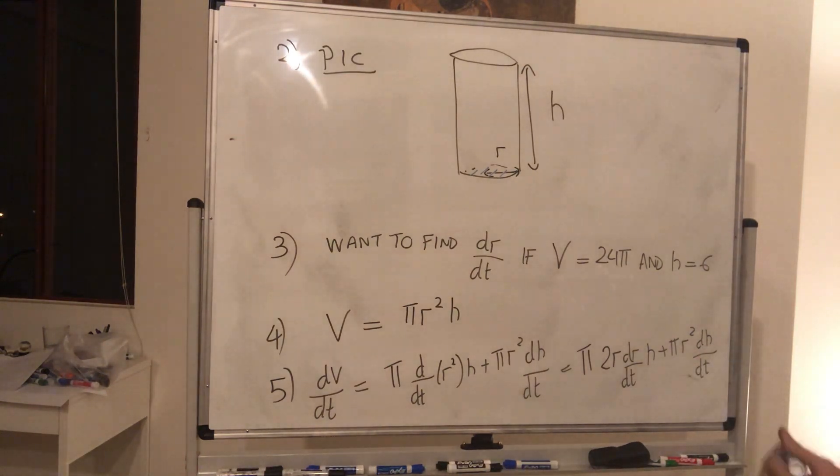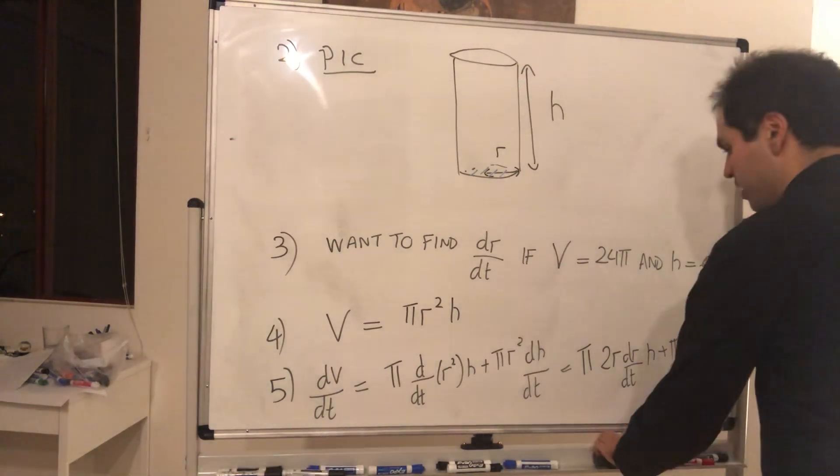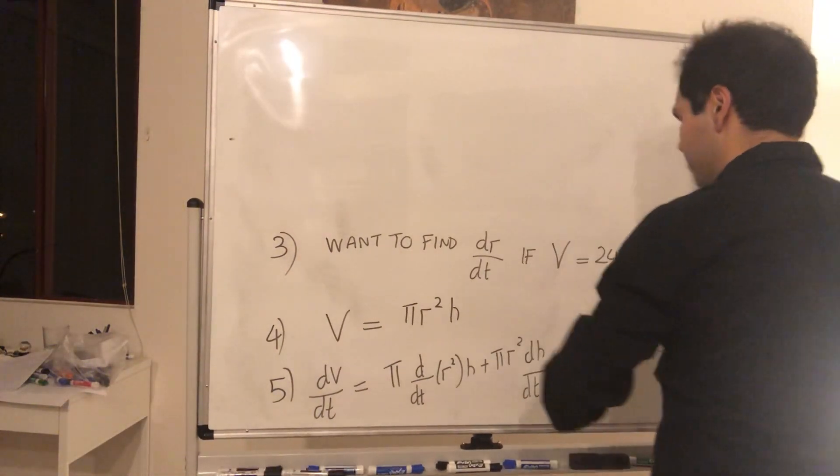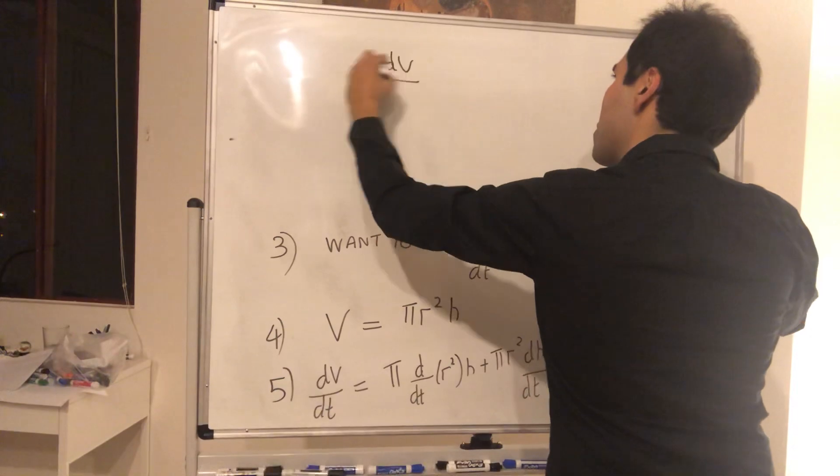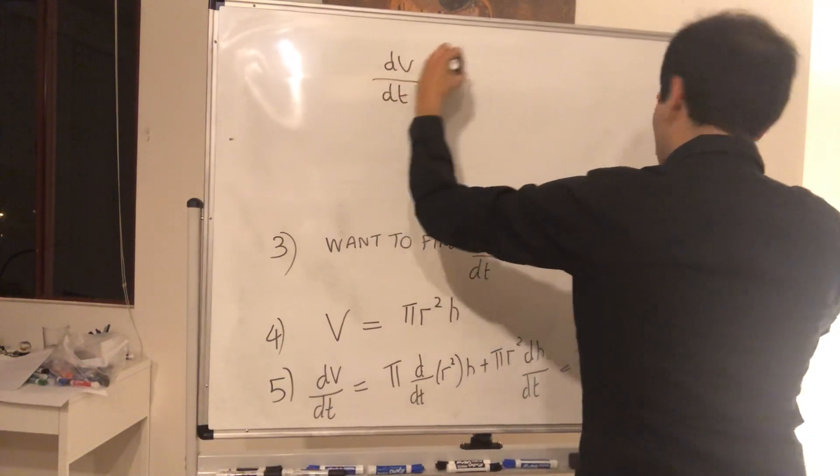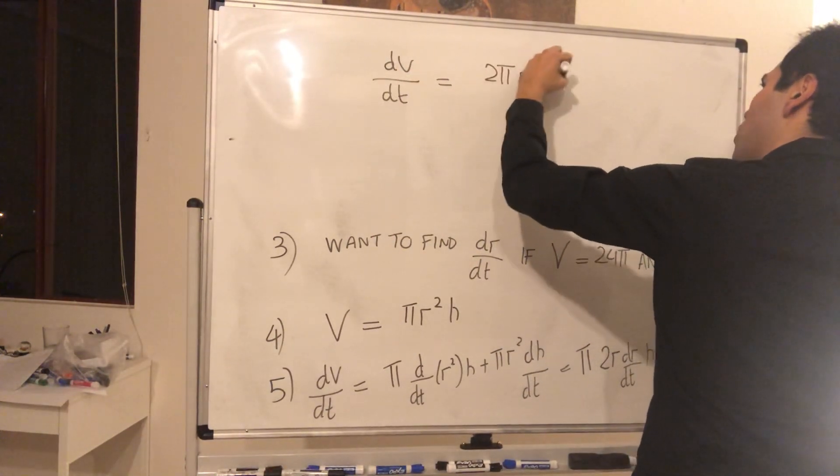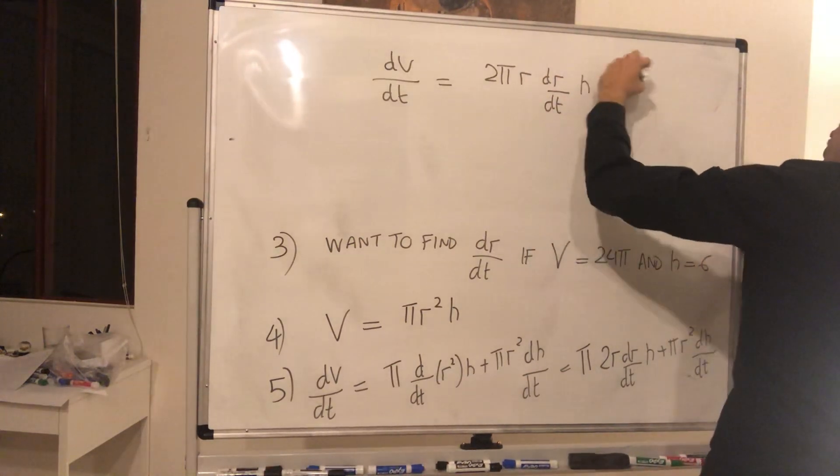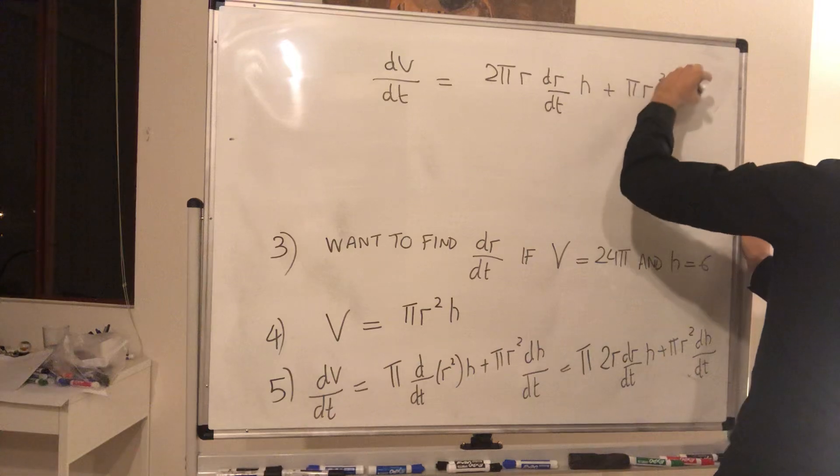Okay, and now, in other words, let's rewrite this. dV/dt is just, if you want, 2πr dr/dt h, plus πr² dh/dt.